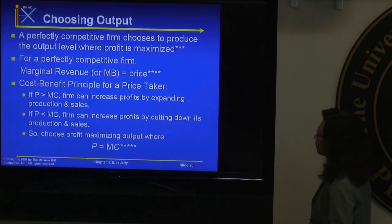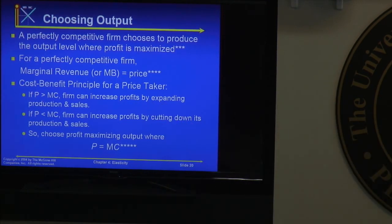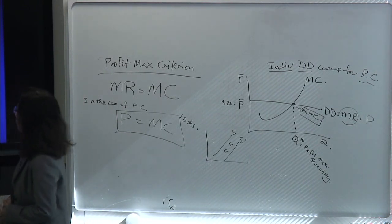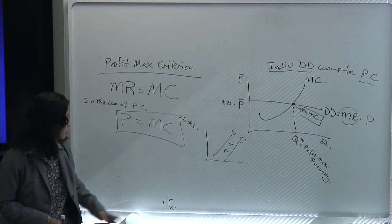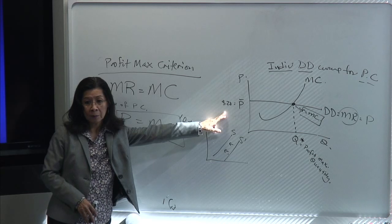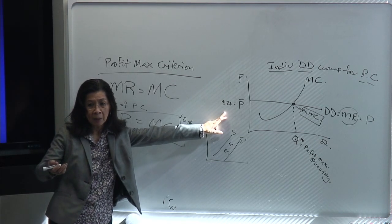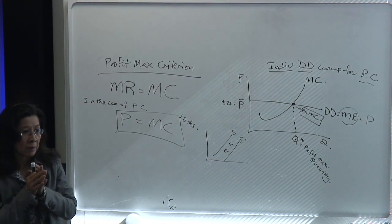For a perfectly competitive firm, marginal revenue equals price. We often express it as P equals MC because that's easier to understand. A perfectly competitive firm is a price taker — it does not have any market power, unlike a monopoly. Later, when we look at monopoly, we will relax the assumptions of perfect competition one by one.